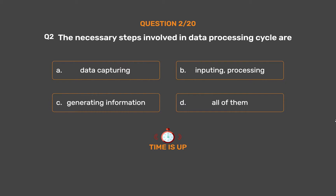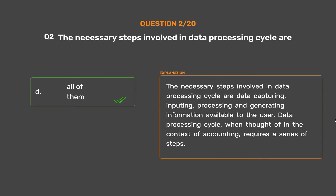The correct answer is Option D: All of them. The necessary steps involved in the data processing cycle are data capturing, inputting, processing, and generating information available to the user. The data processing cycle, when thought of in the context of accounting, requires a series of steps.